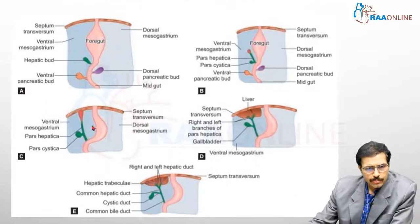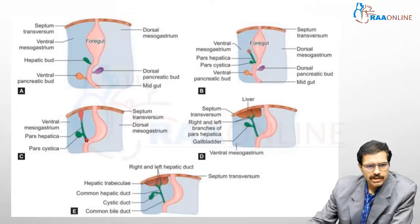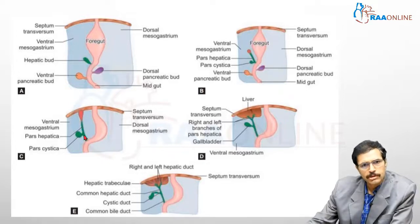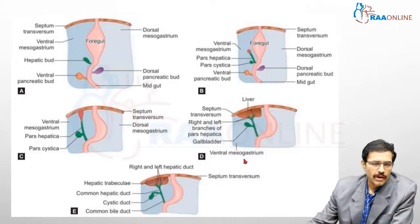The pars hepatica progresses up into the ventral mesogastrium and combines with the septum transversum to form the liver. At its terminal end it divides into two branches to form the right and left hepatic ducts, while the rest of the pars hepatica forms the common hepatic duct. The pars cystica develops into the gallbladder and cystic duct, and the remnant hepatic bud forms the common bile duct.